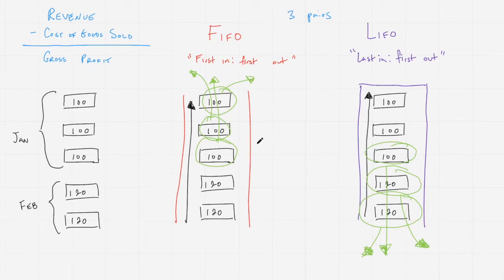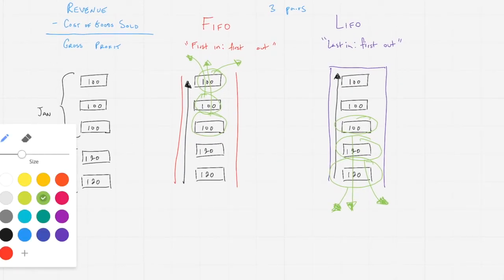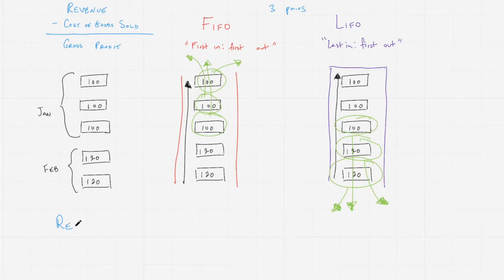You can see, depending on which assumption you're making, whether you're picking in the same order that you acquired the inventory in, or whether you're picking in reverse order, it's going to affect what it ultimately costs. If we factor this consideration into our income statement, we're going to have revenue here, our COGS or cost of goods sold there, and this gets subtracted from revenue to give us our gross profit.